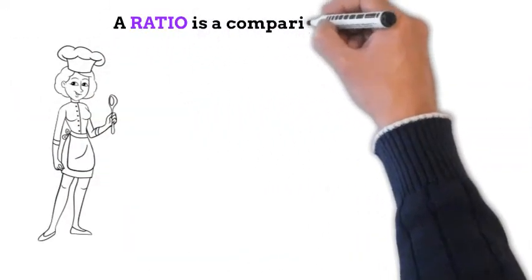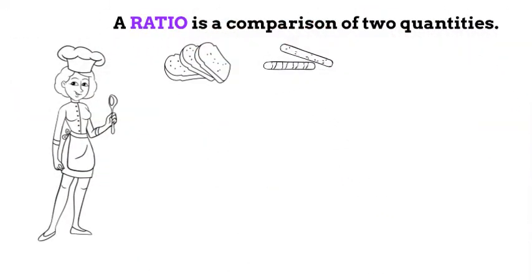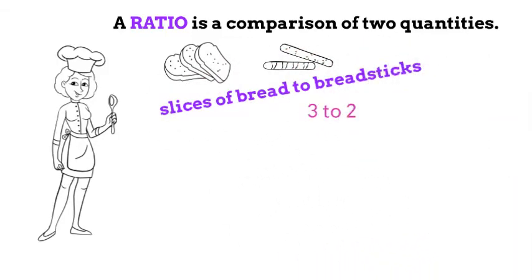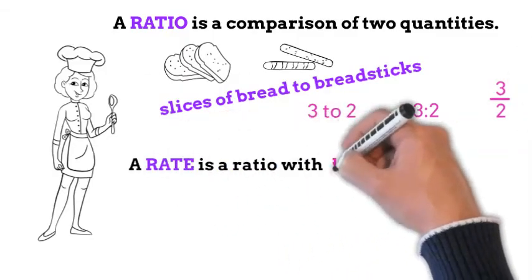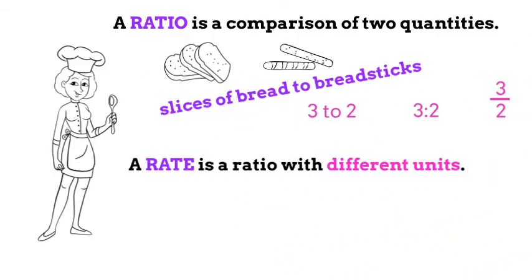Remember, a ratio is simply a comparison of two quantities. A ratio can be written using the word 2 with a colon or as a fraction, and the order of the numbers is important. A rate is a ratio with different units.